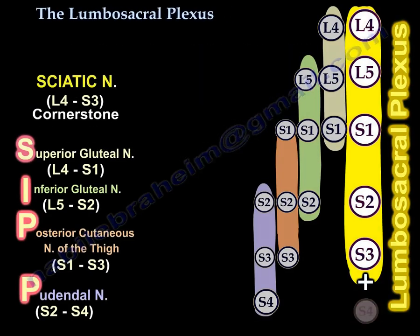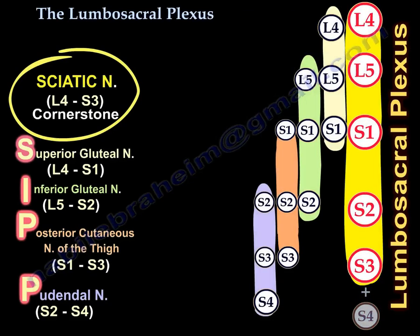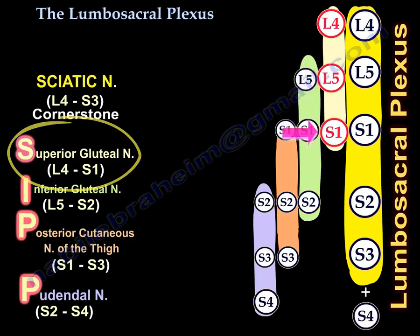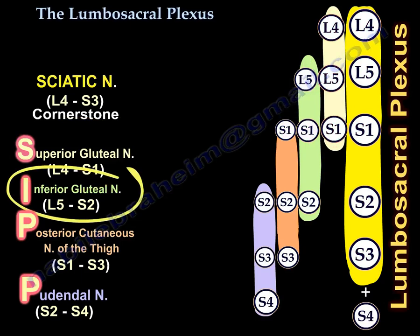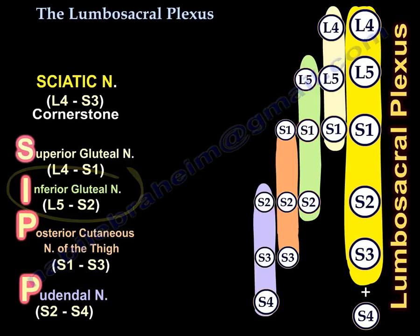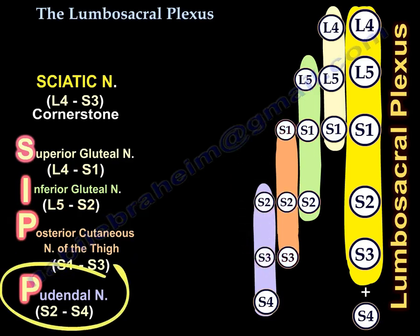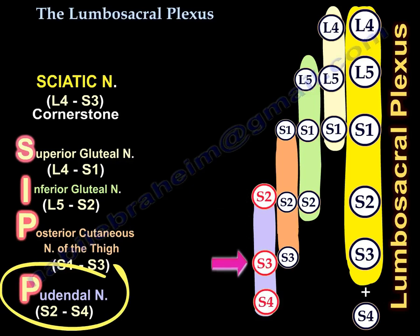The sciatic nerve starts with L4, L5, S1, S2, and S3. The superior gluteal nerve starts one nerve lower: L4, L5, and S1. The inferior gluteal nerve starts one nerve lower: L5, S1, and S2. The posterior cutaneous nerve of the thigh goes one lower: S1, S2, and S3. And the pudendal nerve goes one lower: S2, S3, and S4.